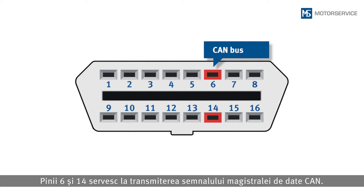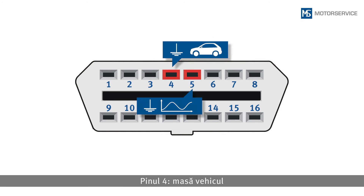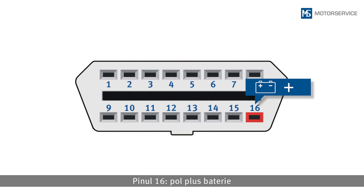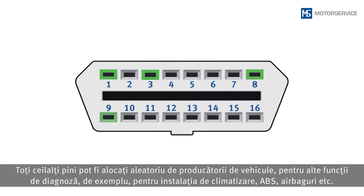Pins 6 and 14 are used to transmit the CAN data bus signal. Pin 4 is vehicle ground, pin 5 is signal ground, and pin 16 is the positive battery terminal. All other pins can be freely used by vehicle manufacturers for additional diagnostic functions, such as air conditioning, ABS, airbags, and so on.